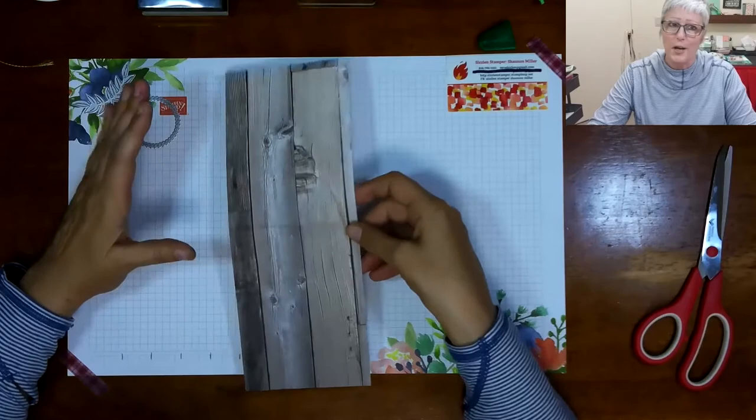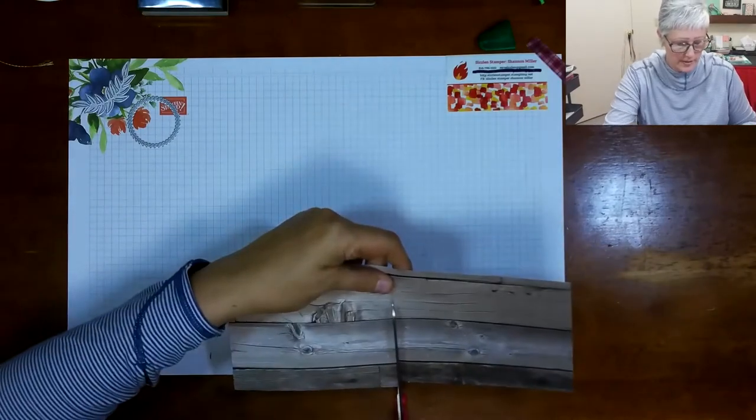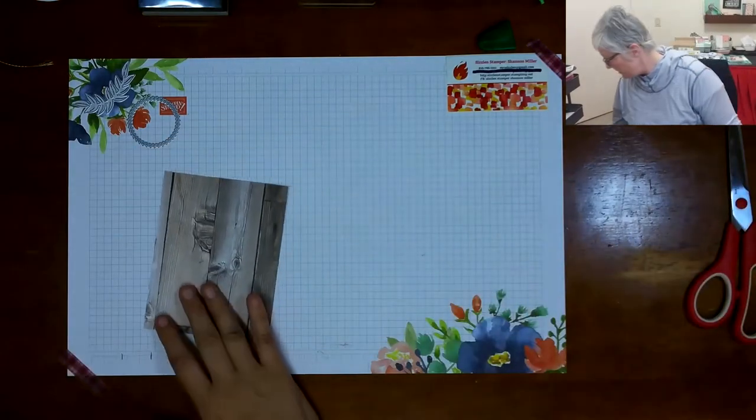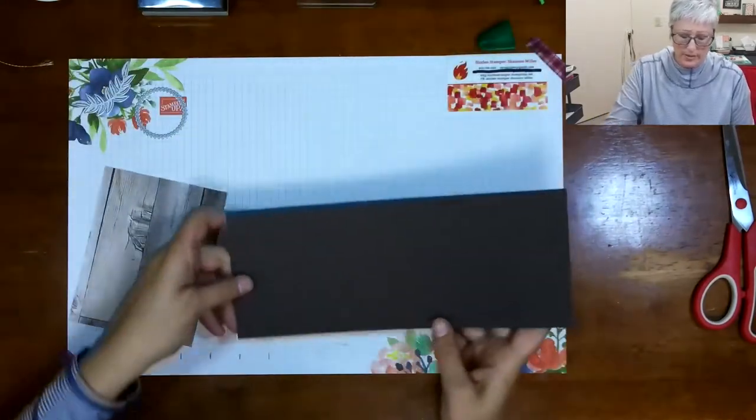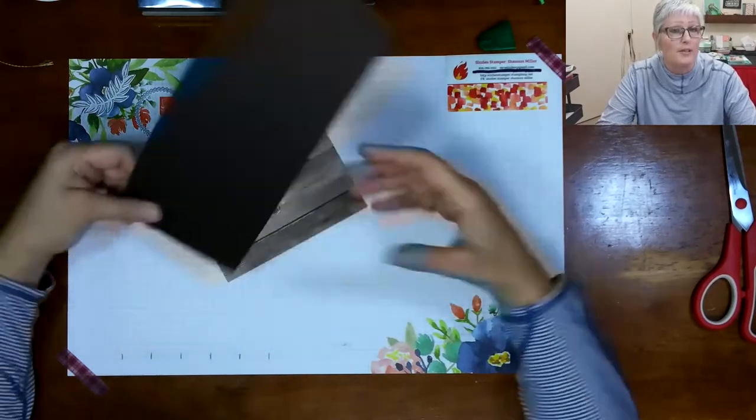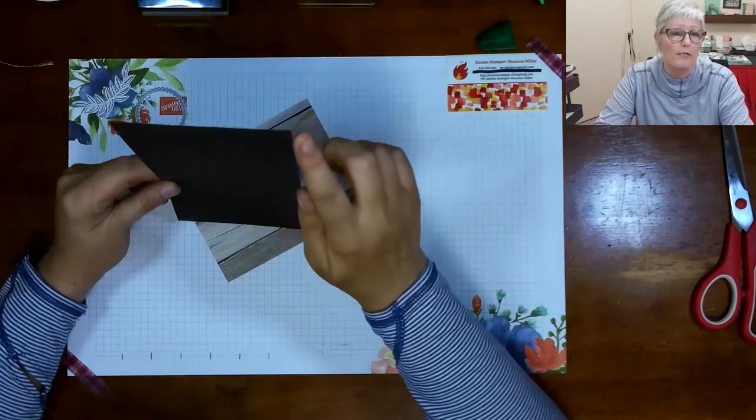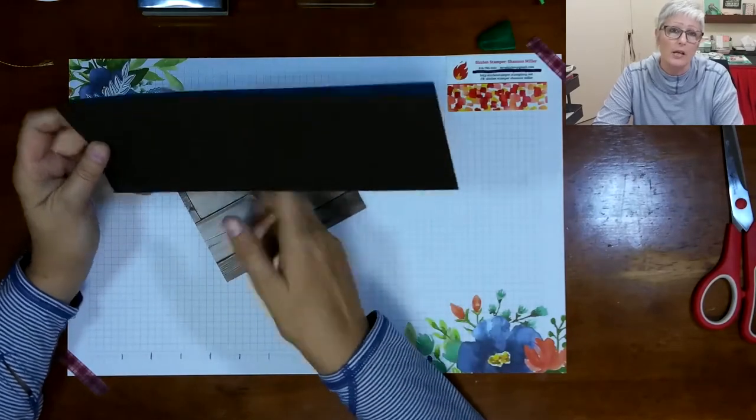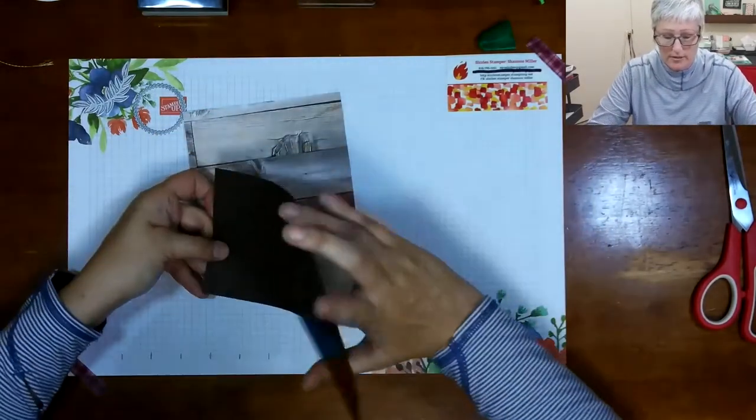I'm also pairing it with some of our designer series paper which is this barnwood paper from the Tasteful Textures suite. We're using a piece of that designer series paper and a piece of Early Espresso. This is cut hot dog style at four and a quarter inches. So I'm just going to go ahead and fold that in half.